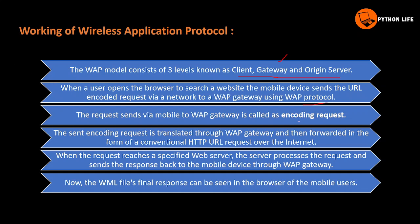The URL-encoded request reaches the WAP gateway, where it is translated and then forwarded in the form of a conventional HTTP URL request over the internet. The WAP gateway sends the HTTP URL request to the origin server, which processes the request and sends a response back.